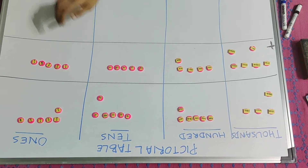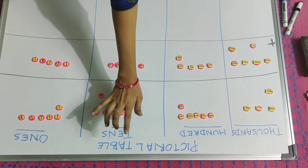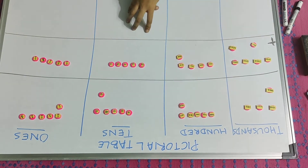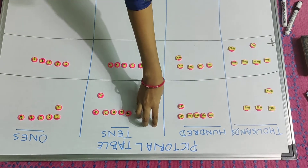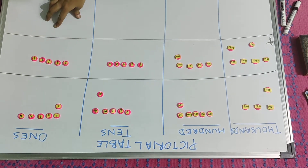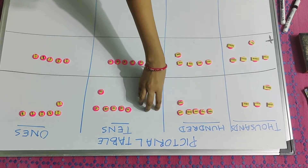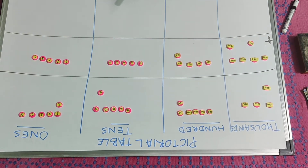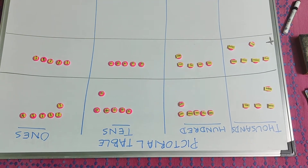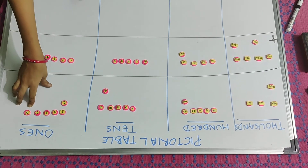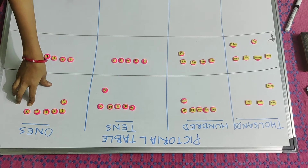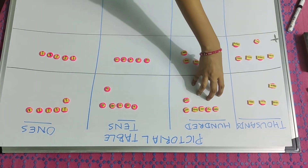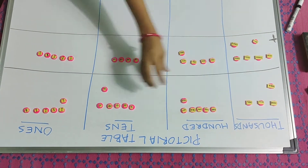I have drawn a pictorial table. This pictorial table will help you how you will act using carryover. Now let us start our addition. Here this is the ones place, this is the tens place, this is the hundreds place, and this is the thousands place.